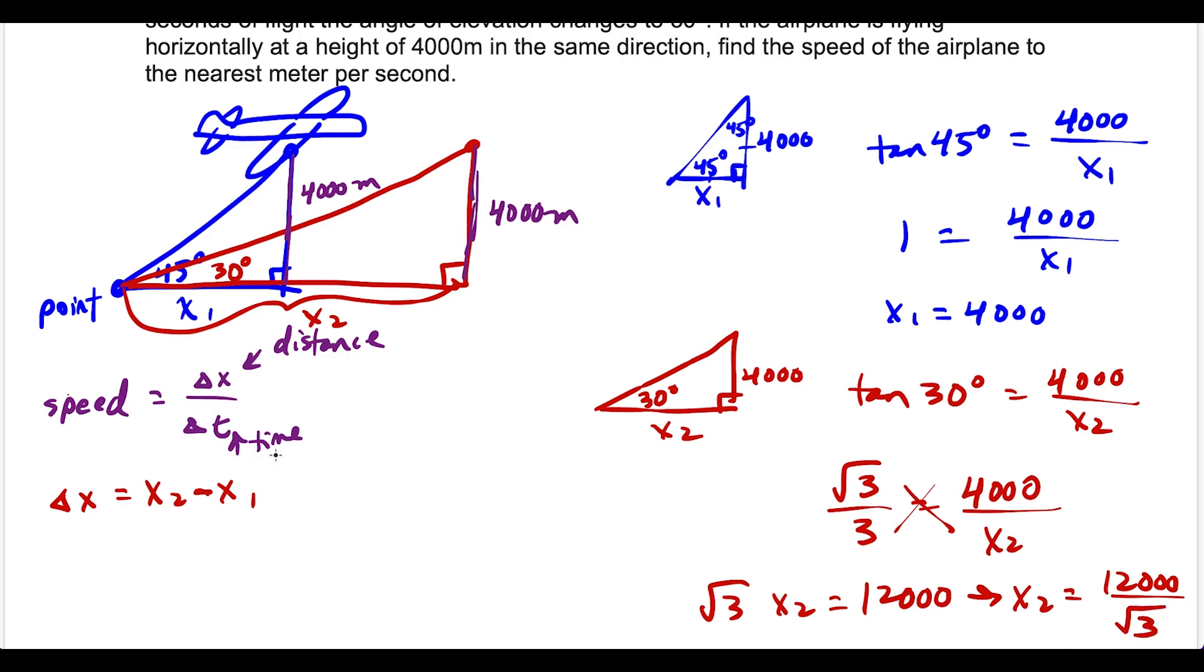So now we have enough information to find the speed of the plane. So the speed here is going to be equal to x2 minus x1. So we have 12,000 over the square root of 3 minus x1 was 4,000. Once again, the plane is already starting at a horizontal displacement here of 4,000 meters. So we're just seeing how much it goes from this point here to this point here. So that's why we're subtracting these two. And remember the units for x1, x2 is meters. We were talking about meters at the start of the question here. So we have this many meters divided by the change in time is 15 seconds.